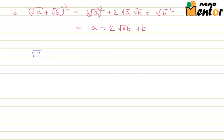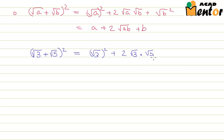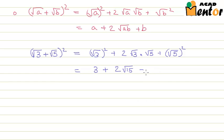We are asked to simplify root 3 plus root 5 whole square. This is nothing but root 3 square plus 2 times root 3 into root 5 plus root 5 square — similar to rational numbers where A plus B whole square equals A square plus 2AB plus B square. This is equal to 3 plus 2 root 15 plus 5, or 8 plus 2 root 15.